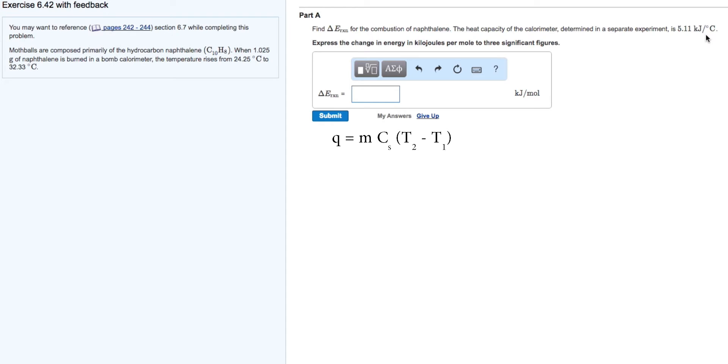Start with the generic enthalpy equation, but in this case, we can ignore mass. The mass for this experiment was already factored out in the experiment that determined the heat capacity of the calorimeter, and the value is given here.